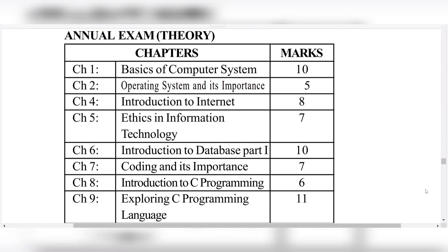For Chapter 7, mainly flowchart is 4 marks and most probably the algorithm is 3 marks, so 7 marks total. Sometimes the flowchart may be 3 marks and algorithm 4 marks, but it still totals 7 marks.